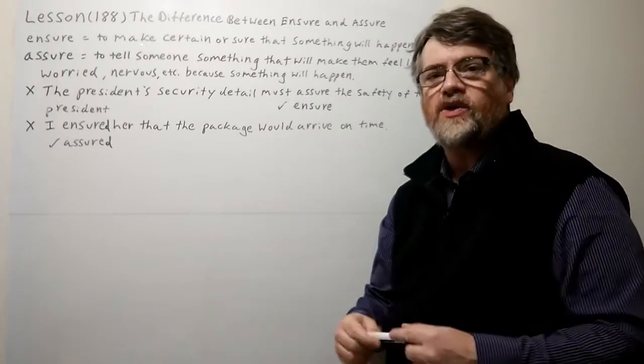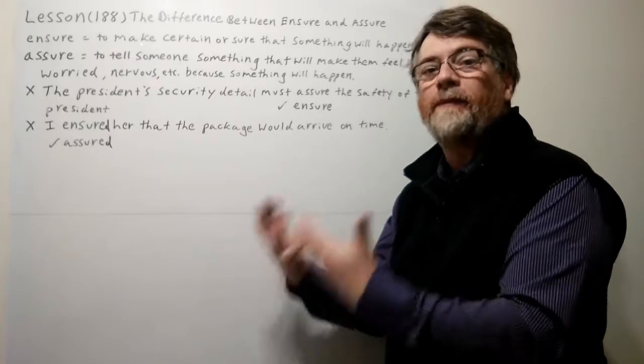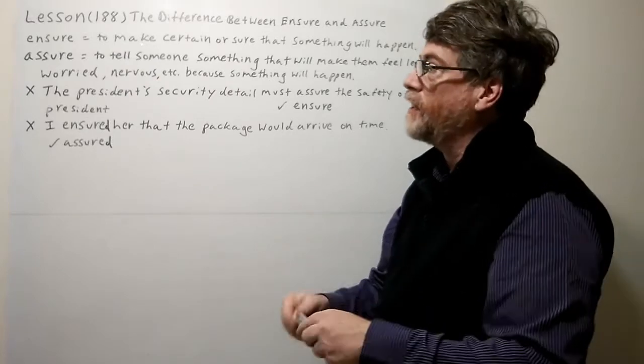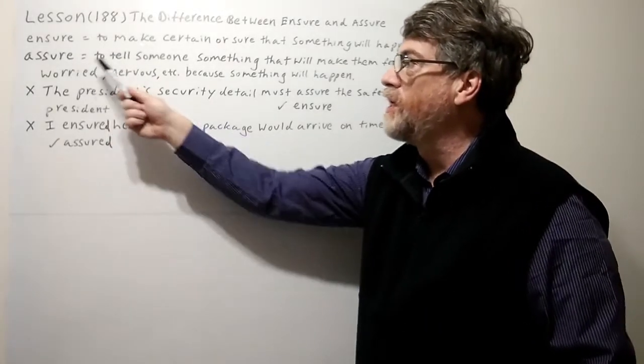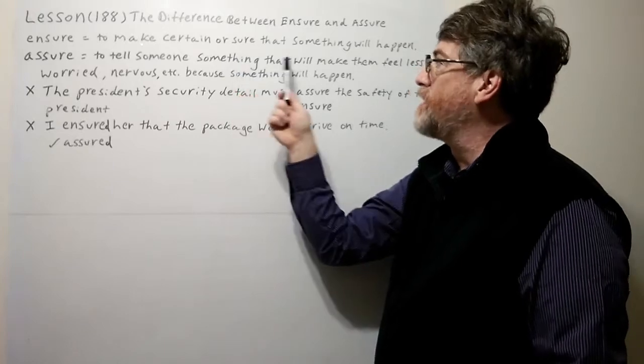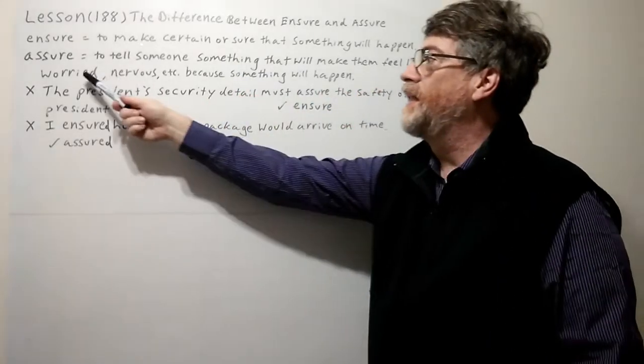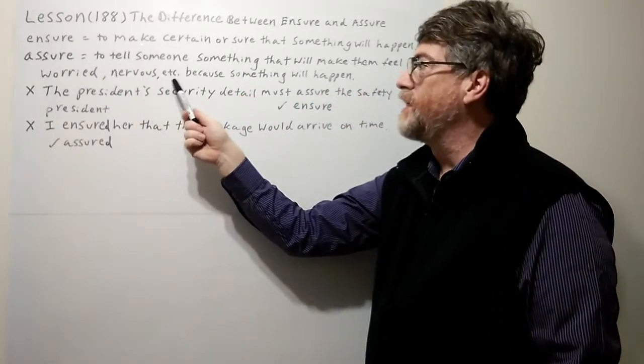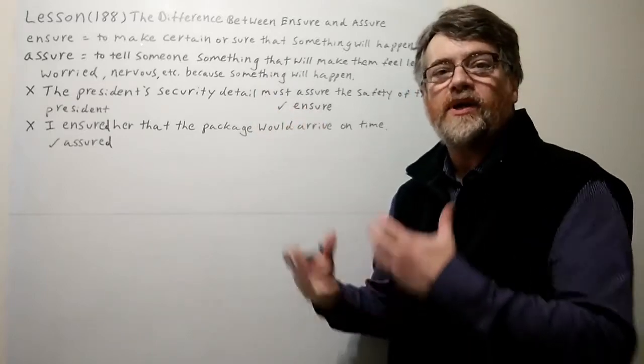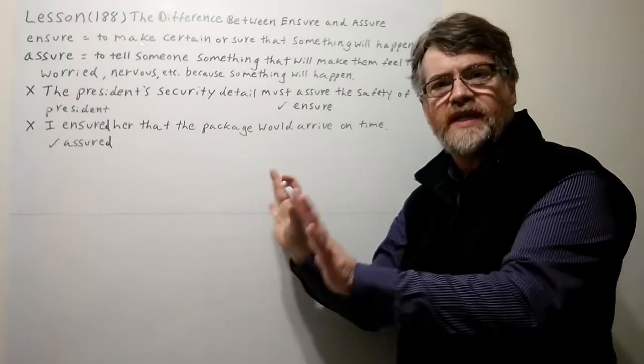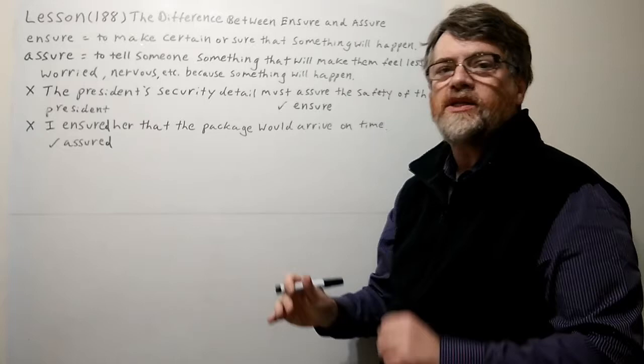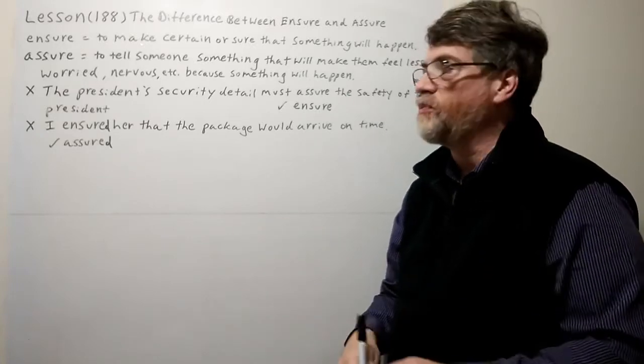Assure is different. Assure is when you're trying to make somebody feel better or less worried. To tell someone something that will make them feel less worried or less nervous because something will happen. You're saying yeah, don't worry, everything's taken care of, it will happen. So there is a clear difference between these two.